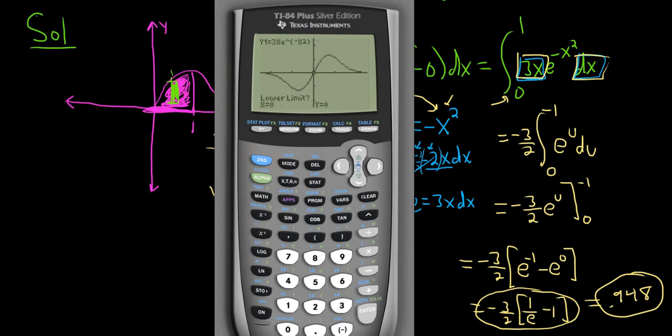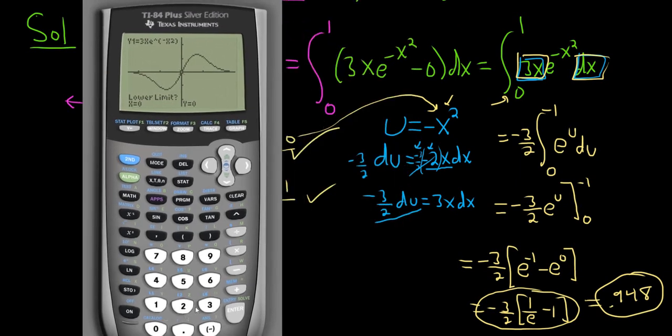And it says lower limit. Well, our lower limit initially was 0. So 0. Then hit enter. Upper limit. Our upper limit is 1. So 1. Enter. Boom.